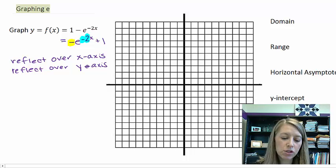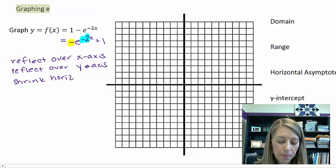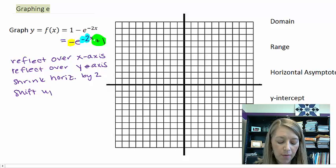The negative here is going to make it reflect horizontally or reflect it over the y-axis. The 2, since it's multiplied, is going to make it shrink, since I'm on the inside, horizontally by 2. And then the 1 on the outside, since it's added, is going to make it shift up 1.